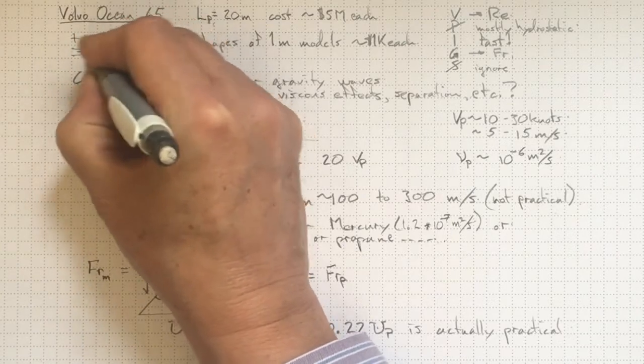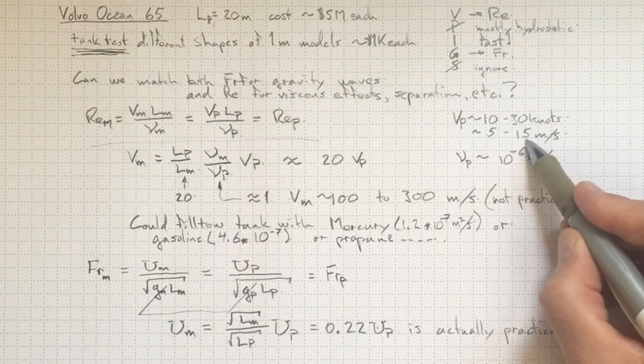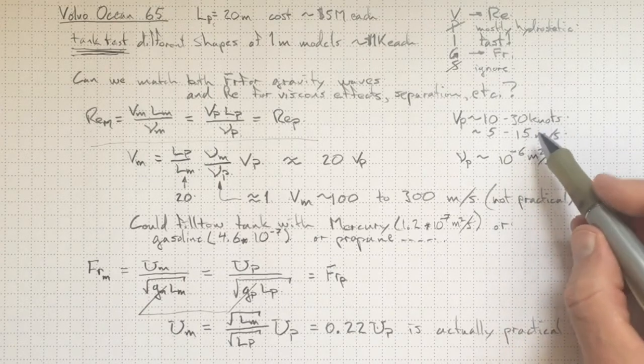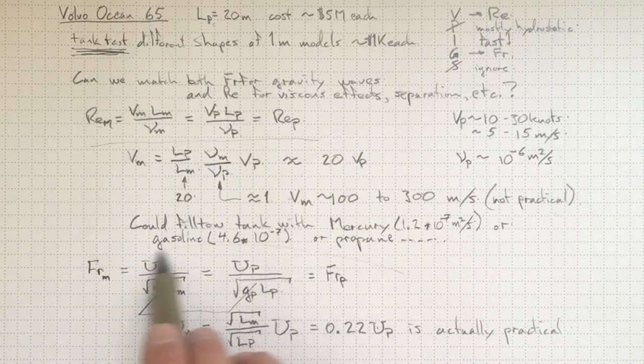So our model velocity needs to be about a quarter of our prototype velocity. And that's actually practical in a tank test in our tow tank. That's going to get us moving at speeds on the order of one to three meters per second. So that's how you go through the scaling process. You can't always scale everything to match perfectly, but you can make at least some of the important quantities match so that you can draw some practical conclusions from your experiments.